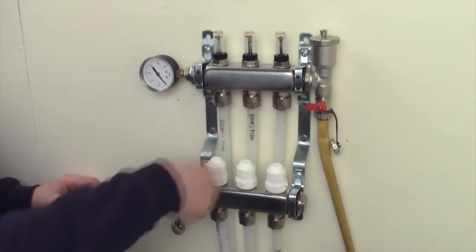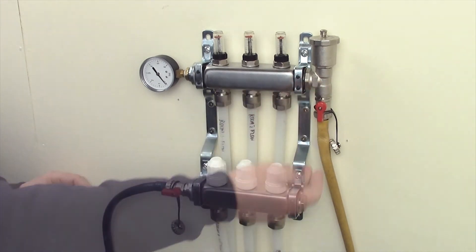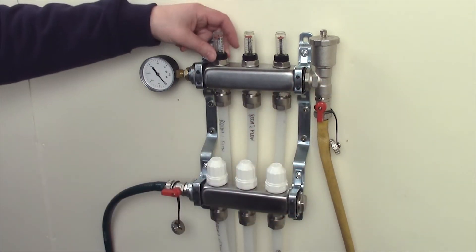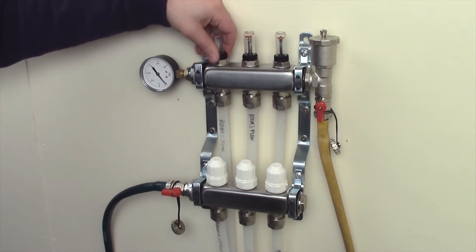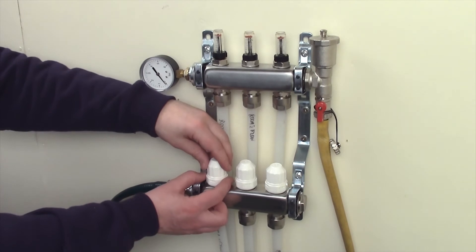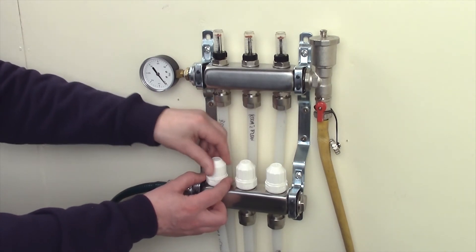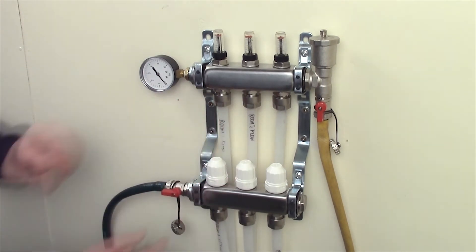Open the auto air vent drain cock. Open the first flow gauge by turning the black knurled nut at the base of the sight glass anti-clockwise by hand. Now open the corresponding decorators cap directly below the flow gauge, again by turning anti-clockwise.